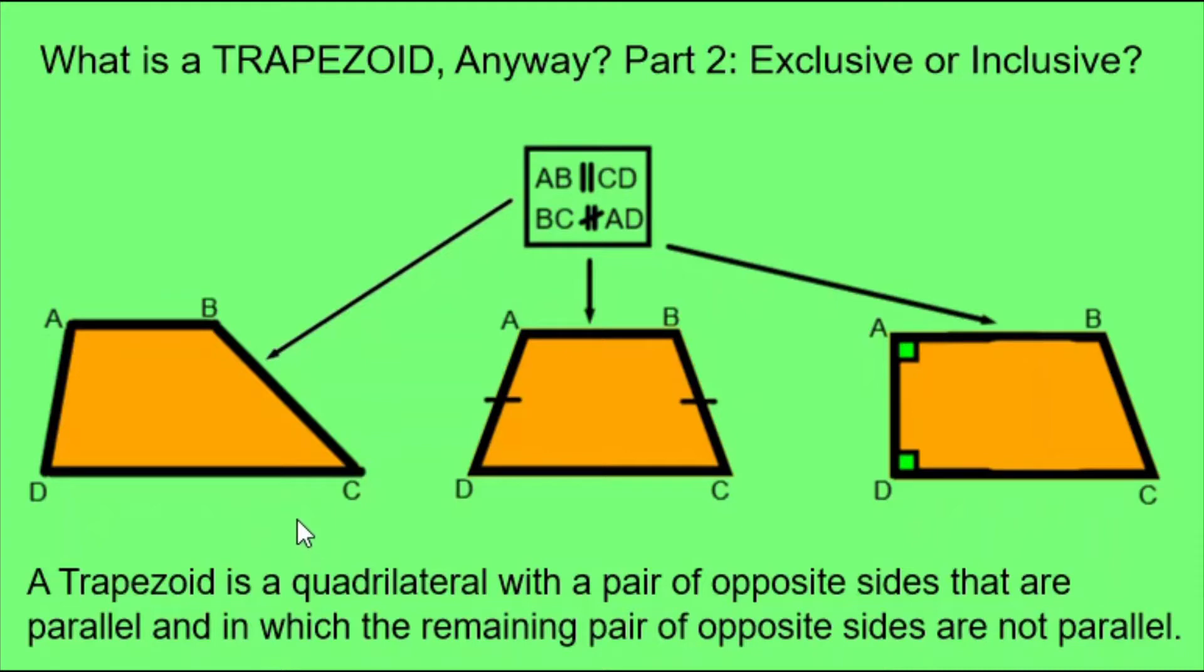The definition that I'm used to using within the curriculum where I teach is down here at the bottom. A trapezoid is a quadrilateral with a pair of opposite sides that are parallel and in which the remaining pair of opposite sides are not parallel. Now that's a little bit long-winded, but I use that on purpose because it's more useful for my students in terms of what they have to know how to do.